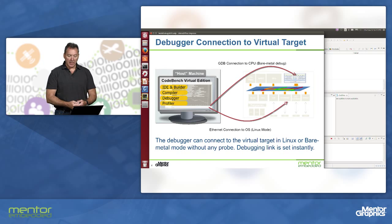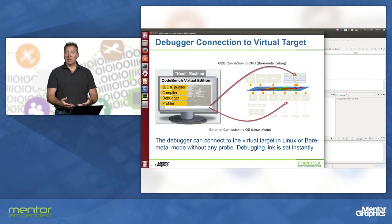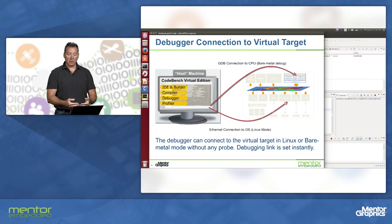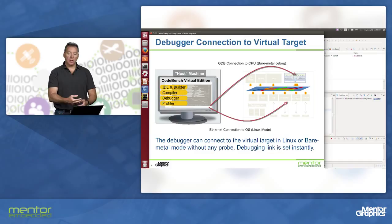There are two ways we can connect. We can connect to the bare metal and debug the execution of the instructions on the processor directly. Or we can start a server under an OS — like in this case Linux — starting a GDB server and connecting through the ethernet port of the virtual platform to the GDB server running on the target.